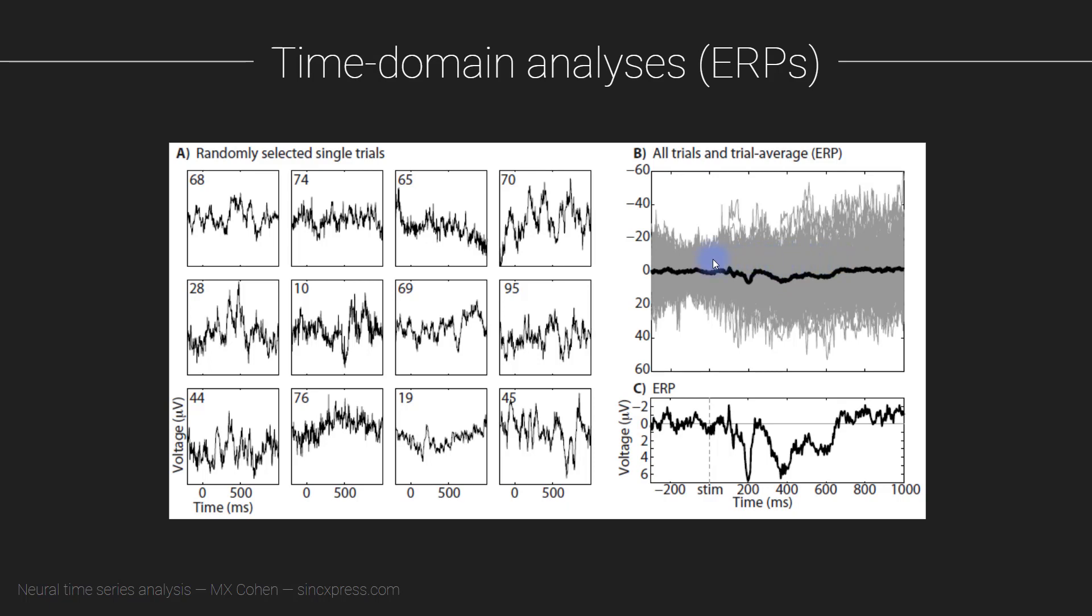What you see in this black line here is the event related potential. So how do you create the event related potential from all these single trials? It's pretty straightforward. All you do is average the voltage levels at each time point over all the trials. So this one single time point in the ERP comes from summing up all of the voltage values for all the trials at this time point, and then dividing that sum by the number of trials, in this case 99.